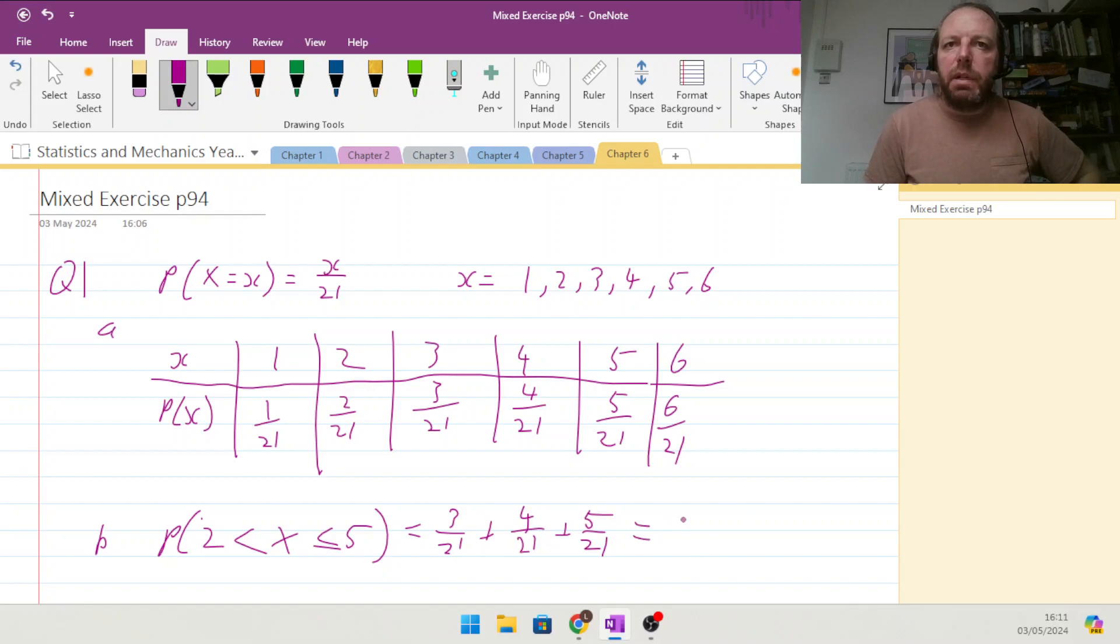9, 10, 11, 12, 12 over 21. That's it for question 1.